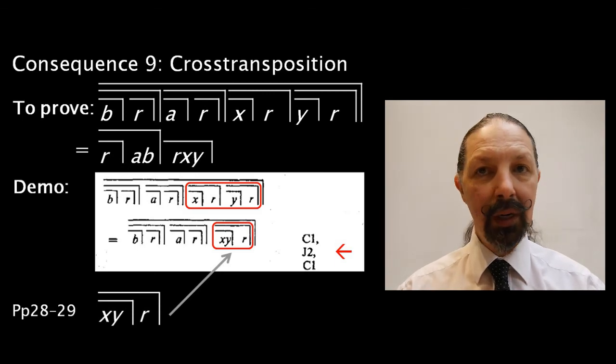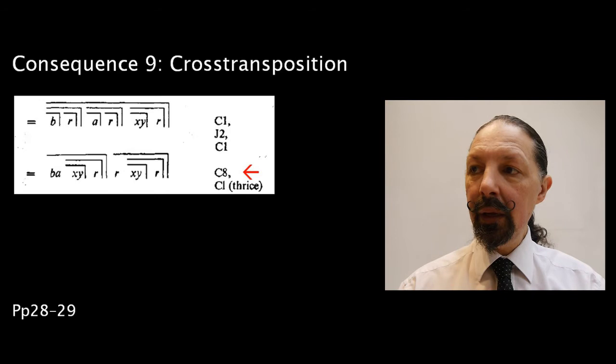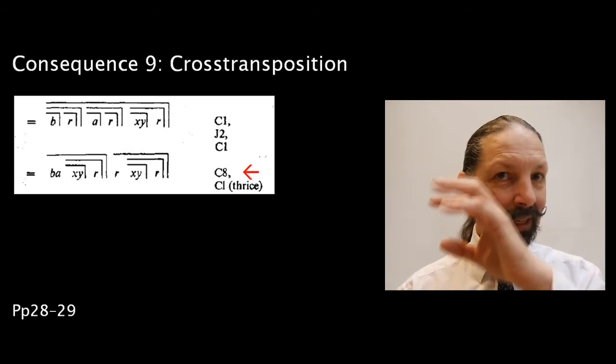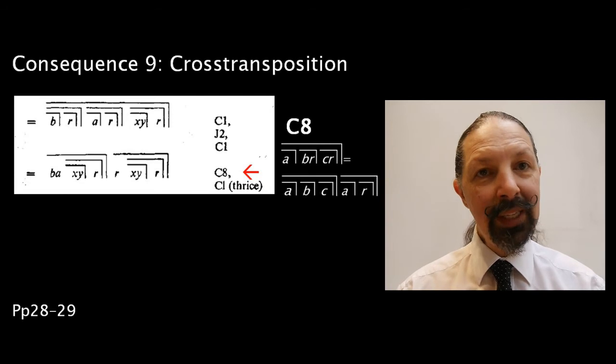X, Y mark over 2, R mark over 2. The next step is to use C8 and then apply that cancellation three times. How does that look? Well, this is what C8 looks like.